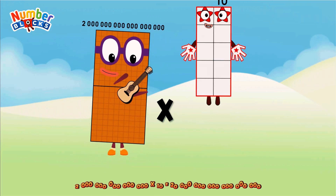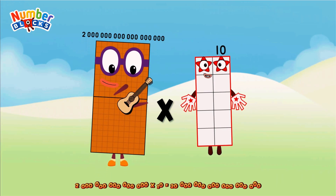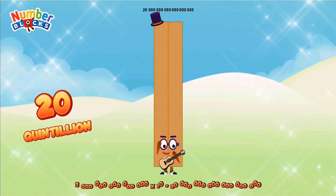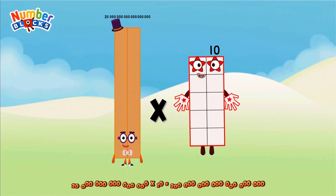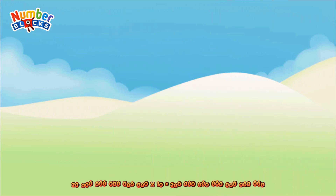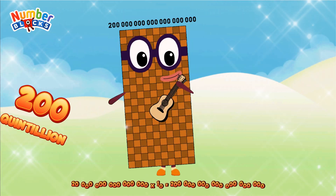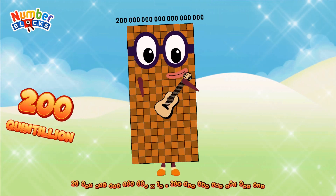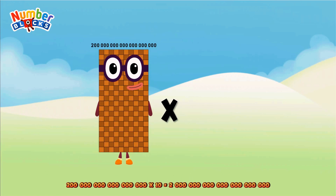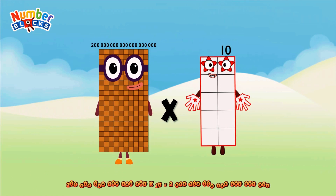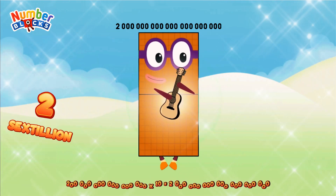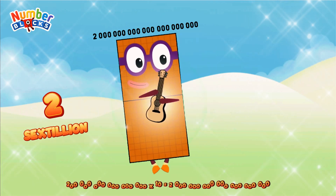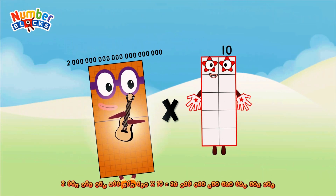Two quintillion multiplied by ten equals Twenty quintillion. Twenty quintillion multiplied by ten equals Two hundred quintillion. Two hundred quintillion multiplied by ten equals Two sextillion.